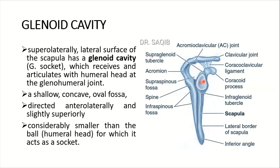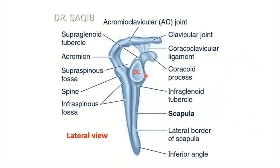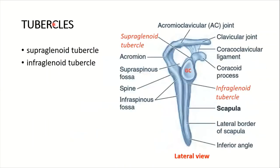The lateral surface of the scapula has the glenoid cavity — a Greek word meaning socket — which receives and articulates with the humeral head at the glenohumeral joint. It is a shallow concave oval fossa, directed anterolaterally and slightly superiorly, considerably smaller than the humeral head for which it acts as a socket, accounting for the mobility of the shoulder joint. Superior to the glenoid cavity is the supraglenoid tubercle, and inferior to it is the infraglenoid tubercle.